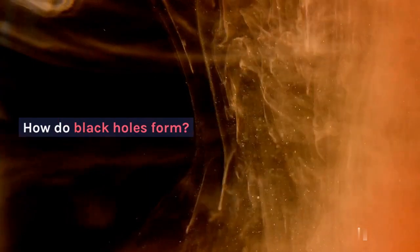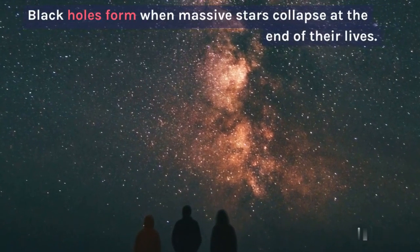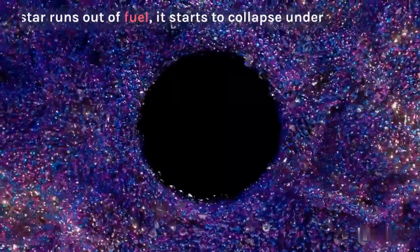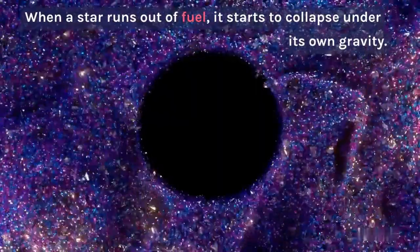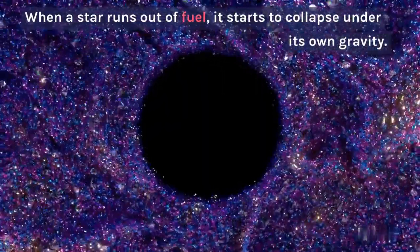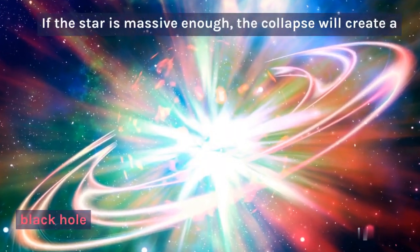How do black holes form? Black holes form when massive stars collapse at the end of their lives. When a star runs out of fuel, it starts to collapse under its own gravity. If the star is massive enough, the collapse will create a black hole.